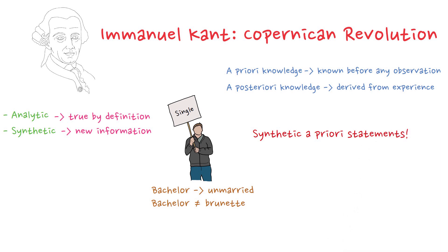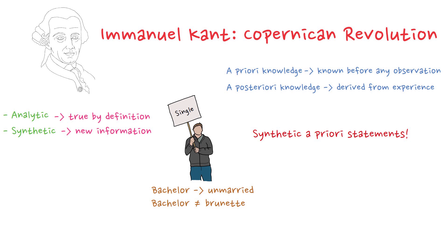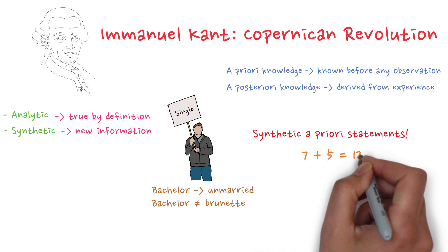These are statements that, like a priori knowledge, do not come from experience, but like synthetic knowledge, they also provide new insights. Instead of being mere definitions, they are fundamental ideas that shape our understanding of the world. An example of a synthetic a priori statement is 7 plus 5 equals 12.